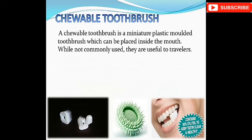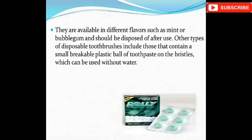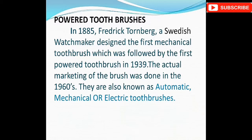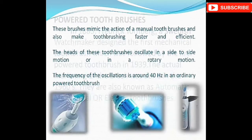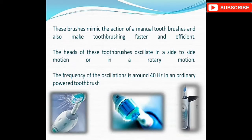Chewable toothbrushes are available in flavors such as neem, mint, and bubble gum, and should be disposed of after use. Some disposable toothbrushes contain a small breakable plastic ball of toothpaste. Power toothbrushes were first designed as a mechanical toothbrush in 1885 by Swedish watchmaker Frederick Torn, followed by the first power toothbrush in 1939. These brushes mimic manual toothbrush action and make brushing faster and more efficient, with heads that oscillate side-to-side or in a rotary motion.